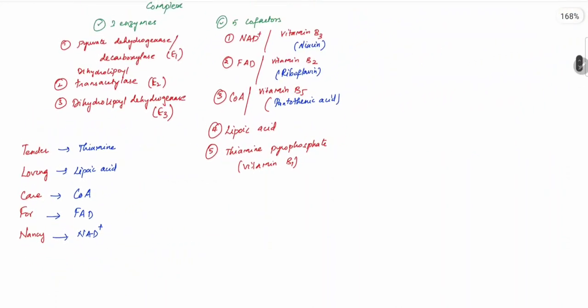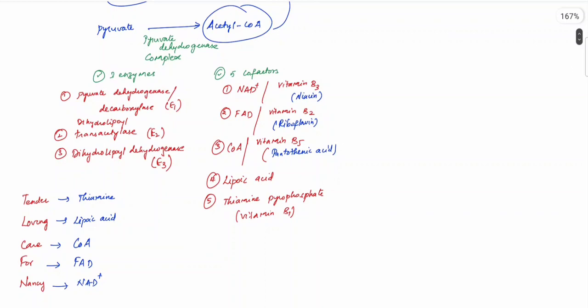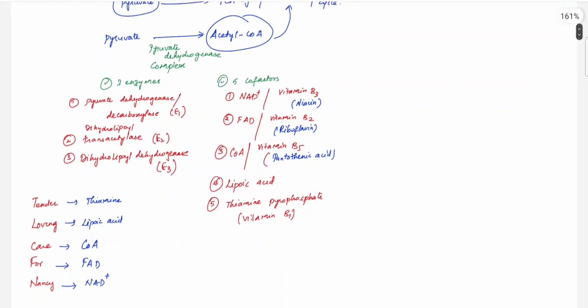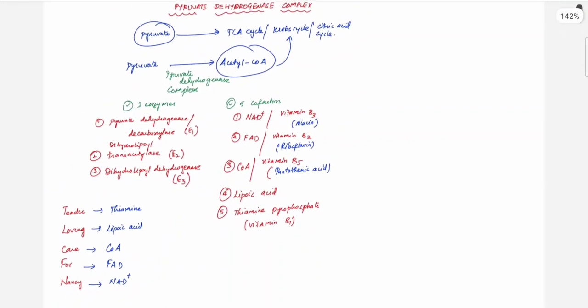This is all about the pyruvate dehydrogenase complex. It's a series of enzymes involved in the formation of acetyl coenzyme A from pyruvate to enter into the Krebs cycle. I hope you're clear. Thank you for watching.